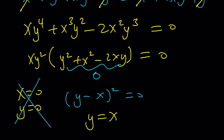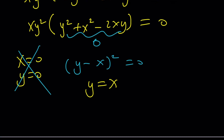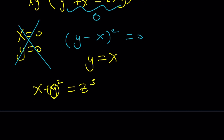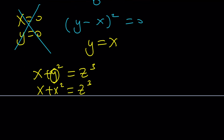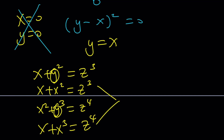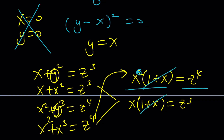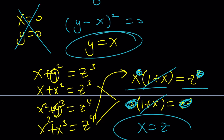Since y equals x, let's substitute into the first equation. x plus y squared equals z cubed becomes x plus x squared equals z cubed. In the second equation, x squared plus y cubed equals z to the fourth becomes x squared plus x cubed equals z to the fourth. Factoring the first gives x·(1 plus x) equals z cubed, and the second gives x squared·(1 plus x) equals z to the fourth. Dividing these equations, the (1 plus x) cancels, leaving x equals z. Since y equals x and x equals z, we have x equals y equals z.